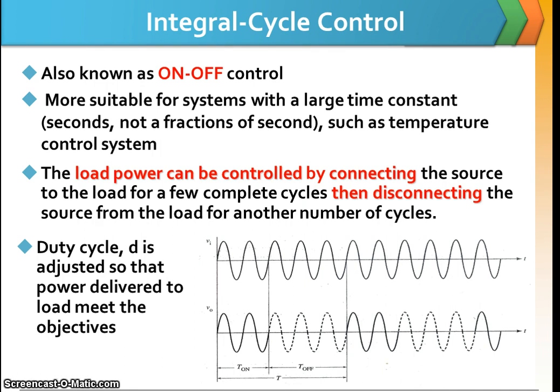As I mentioned earlier, integral switching schemes for AC to AC have two types. Number one, integral cycle control. And number two, called phase control. Integral cycle control also known as on-off control, which is suitable for systems with a large time constant, such as temperature control systems.